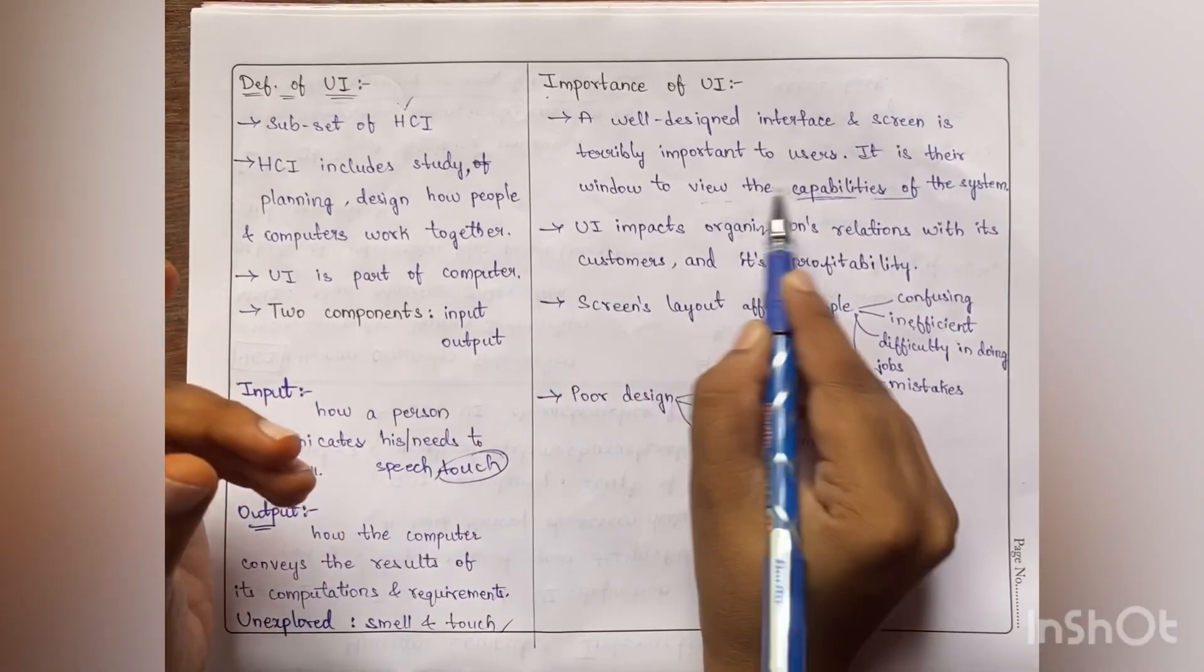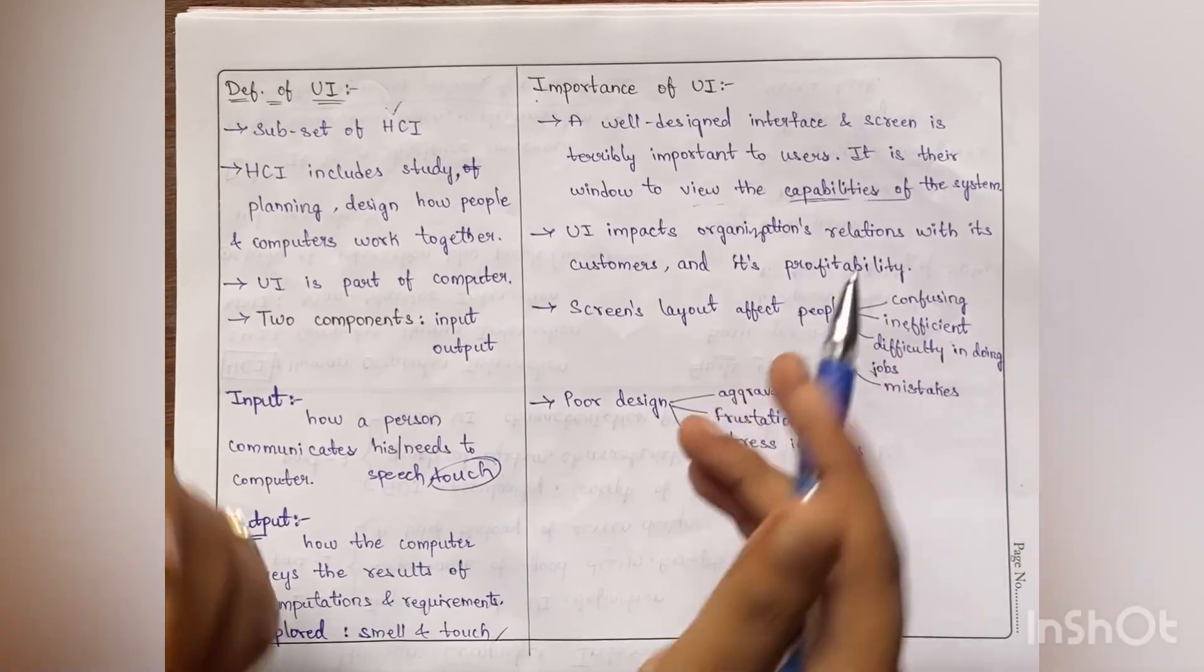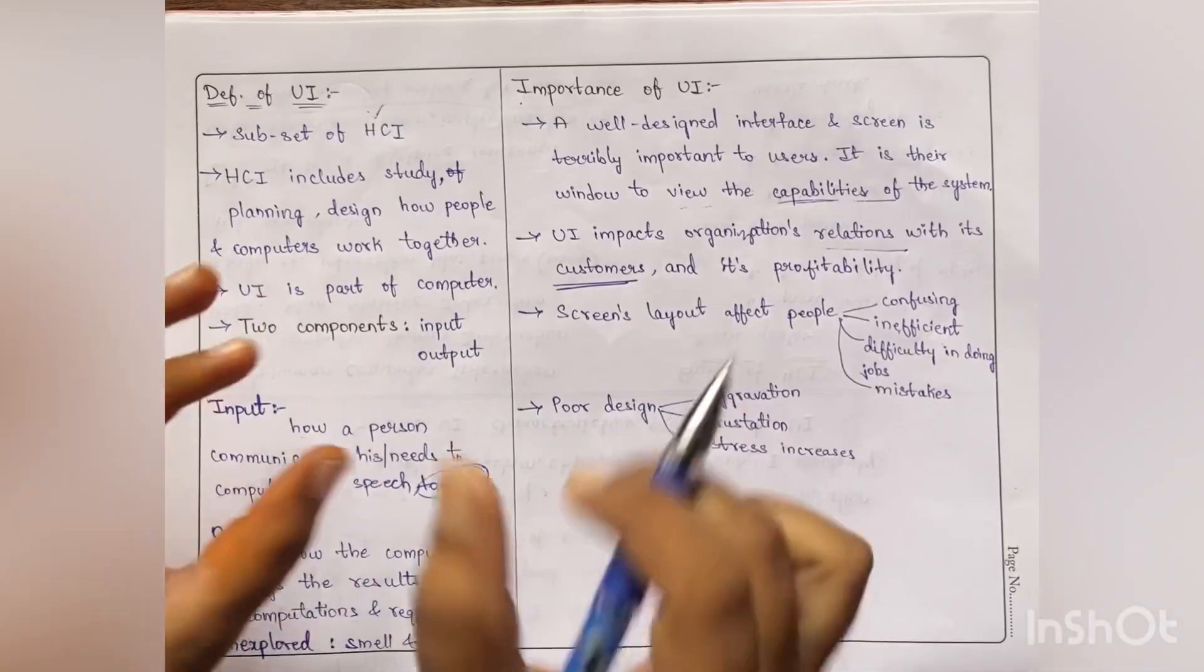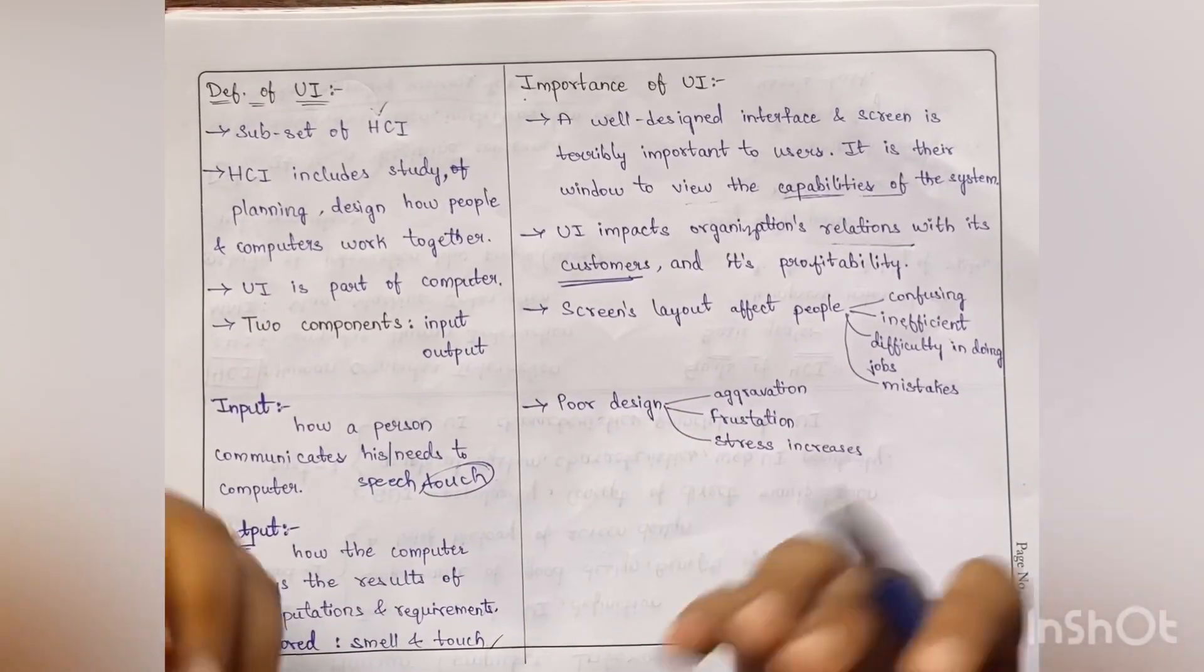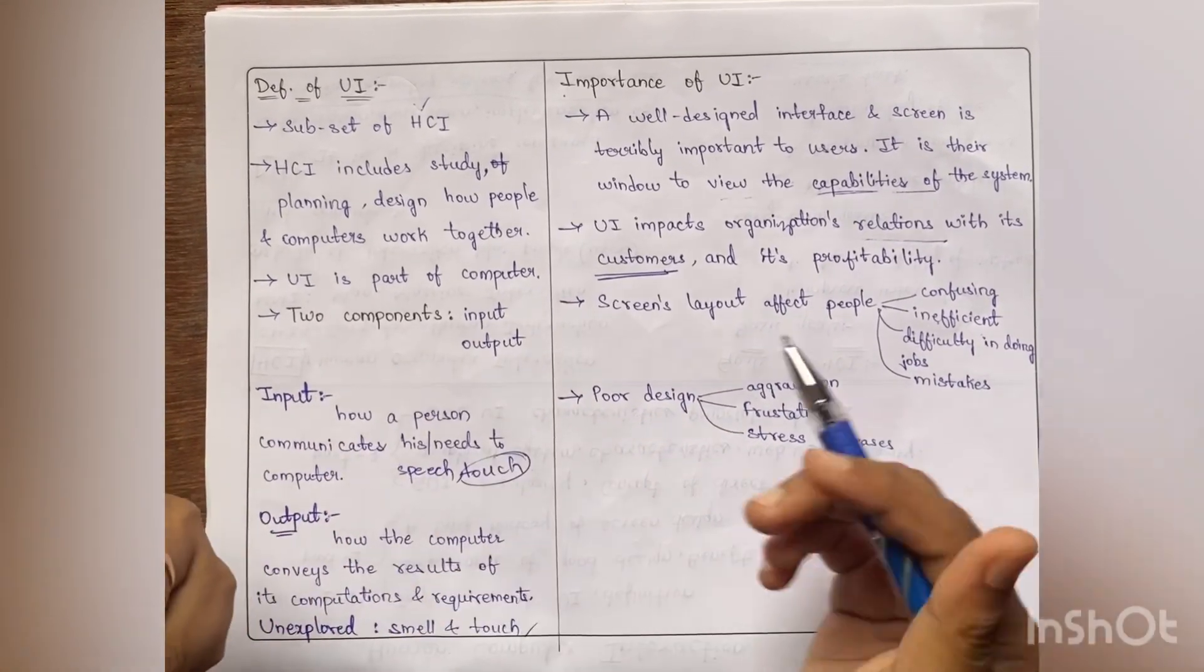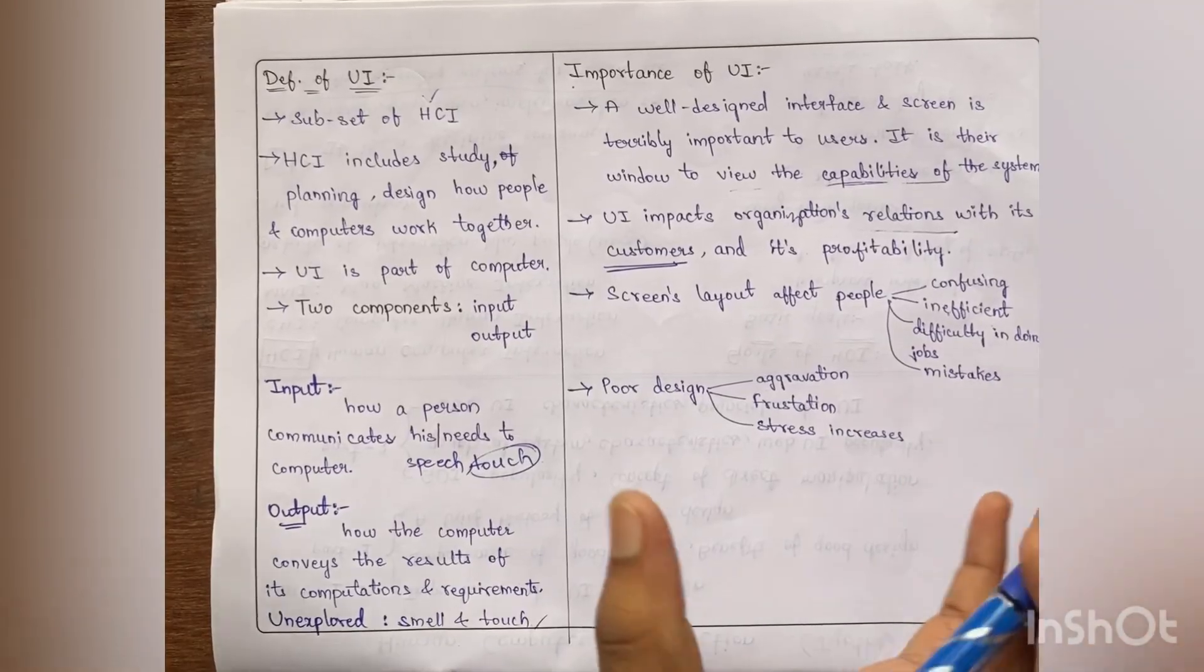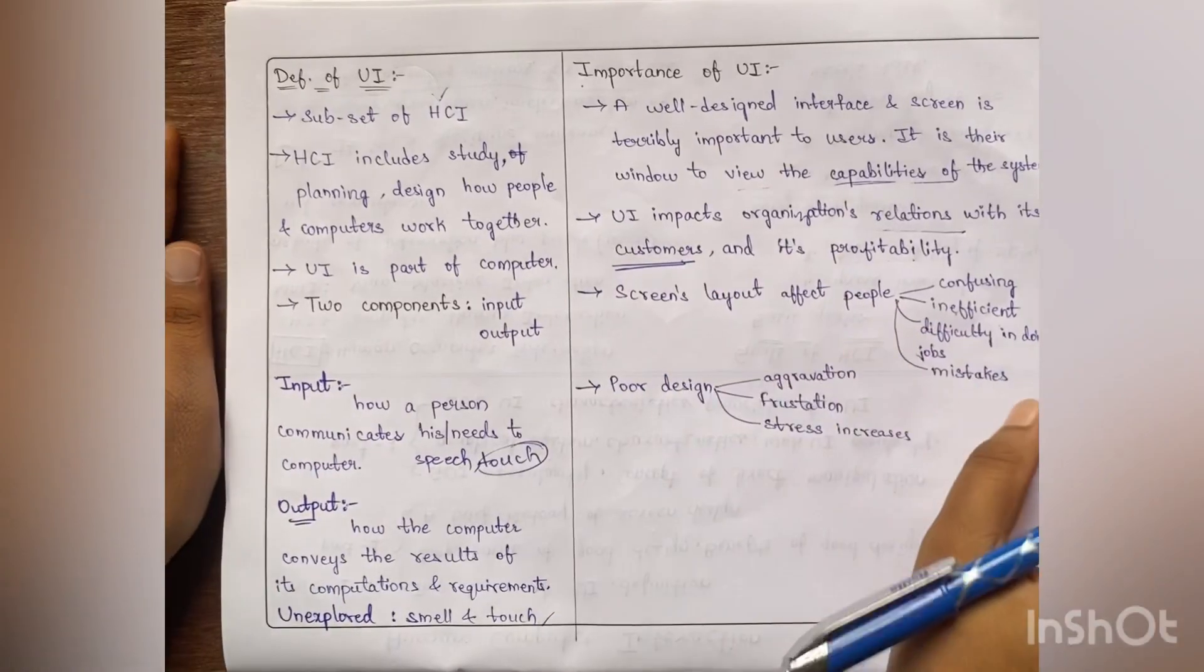Now this user interface impacts organization's relationships with customers. That means it has direct impact on the customers. If it is very good, then people start using it without any complexities. When people started using it, when number of people started installing this Instagram app, then the company, the organization gets more profitability.